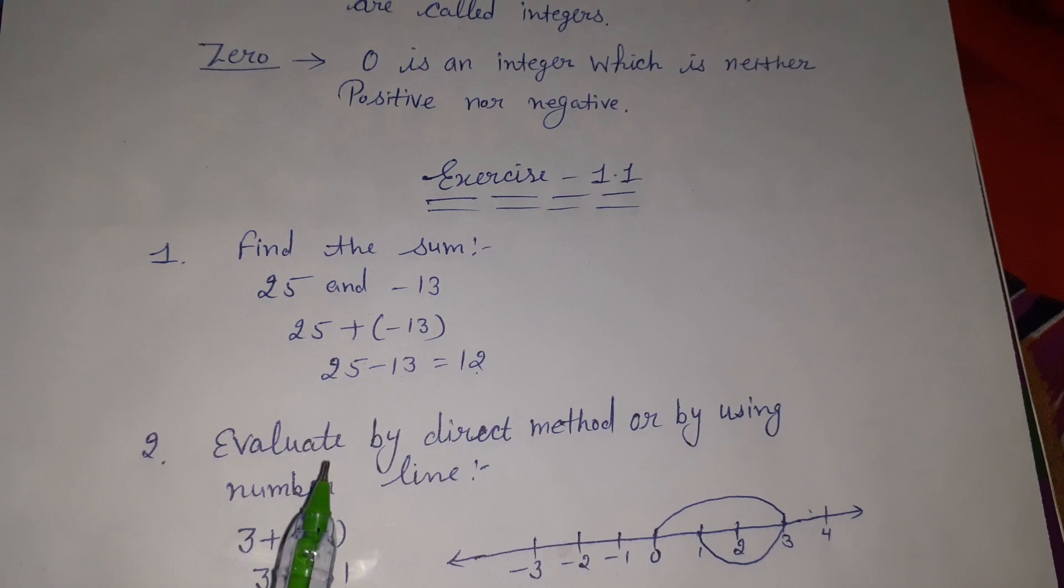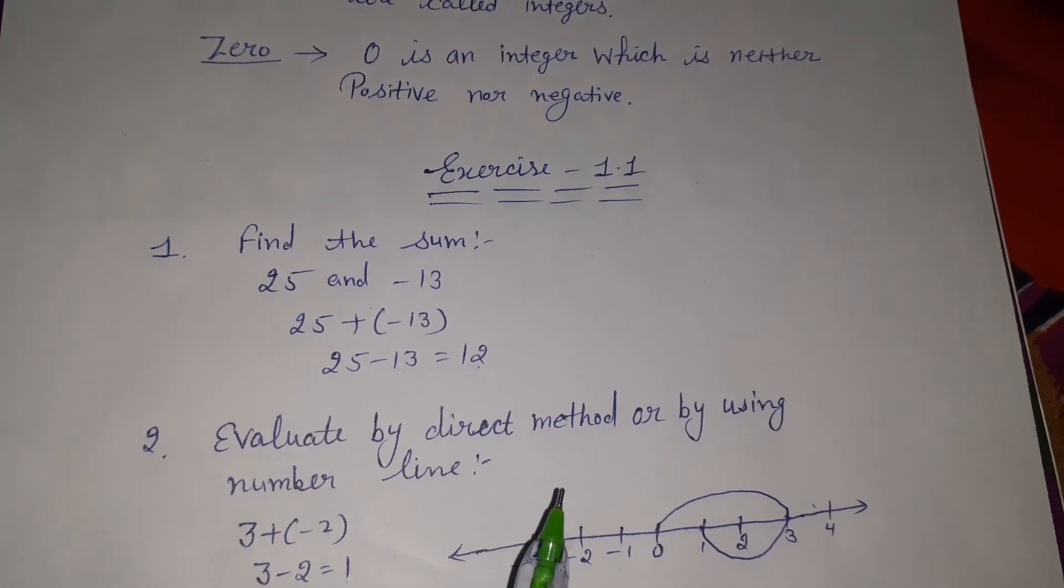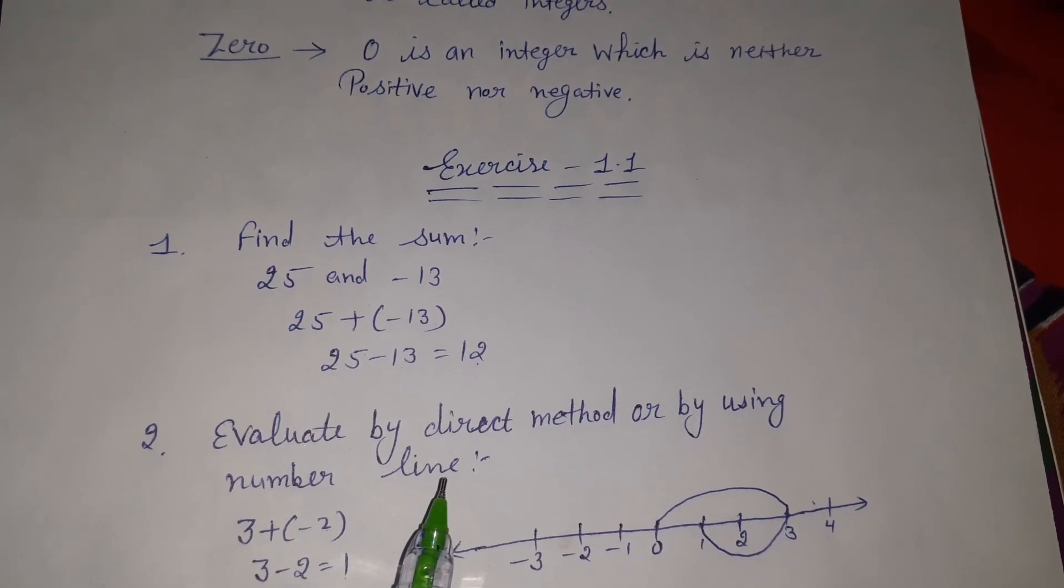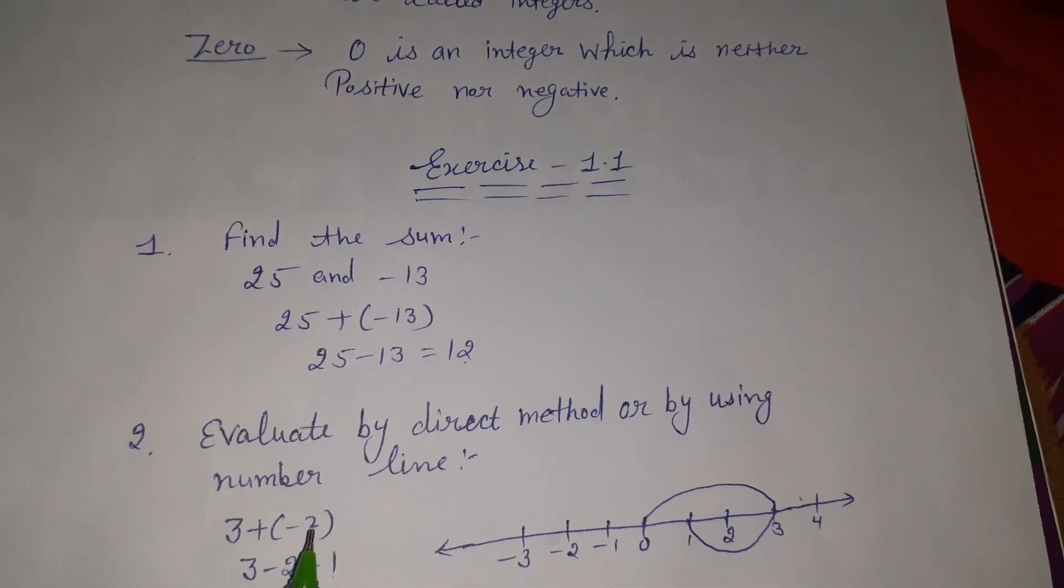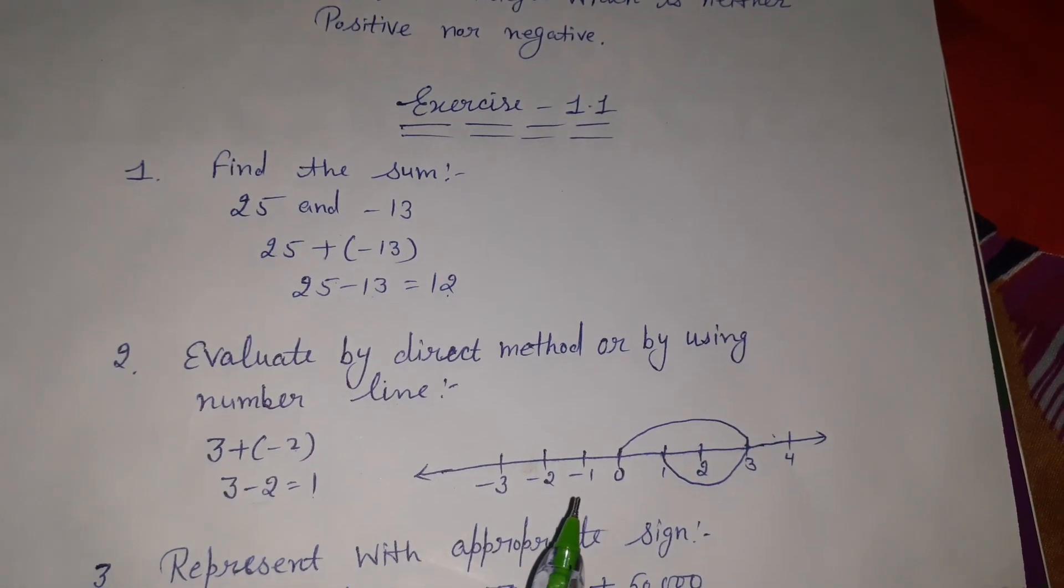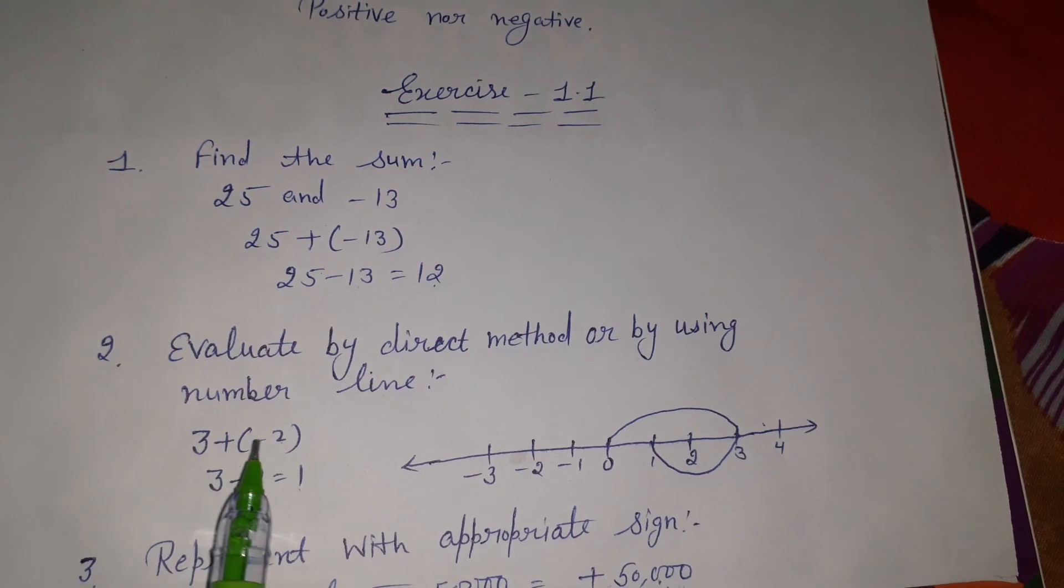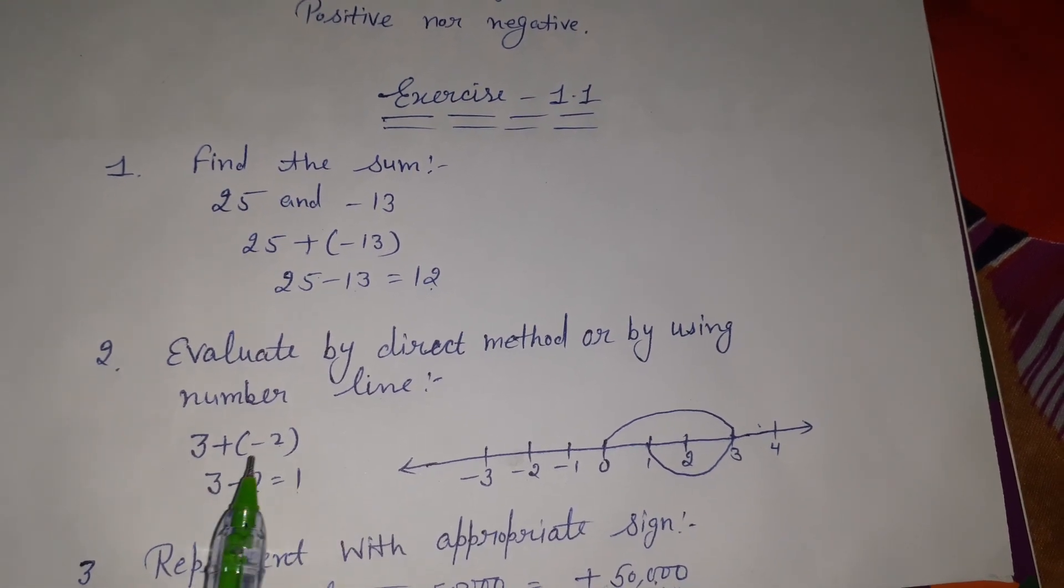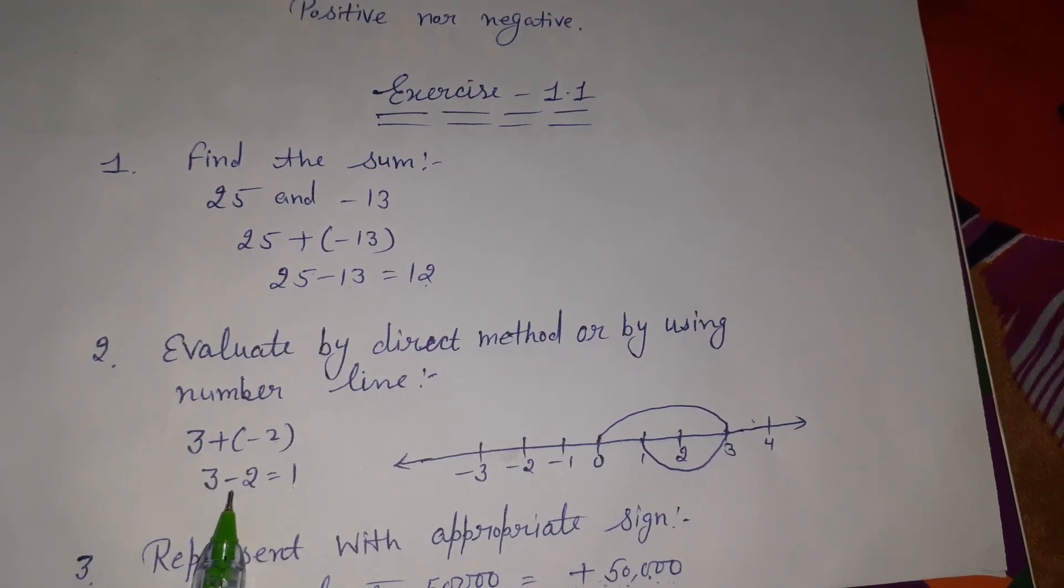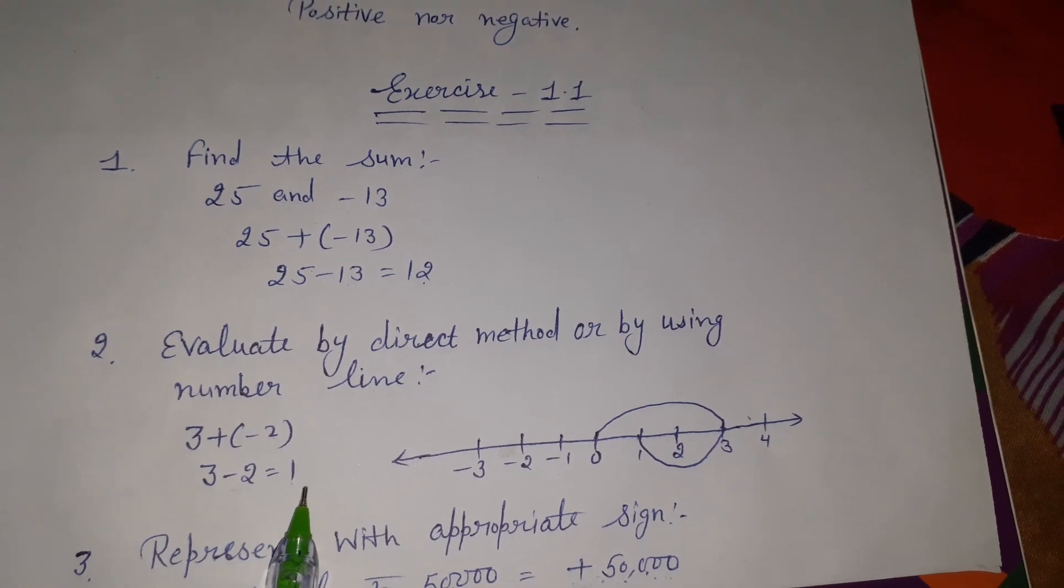Second sum: evaluate by direct method and by using number line. We need to solve this by direct method and also show on number line. 3 + (-2). Plus minus becomes minus. 3 - 2 = 1.